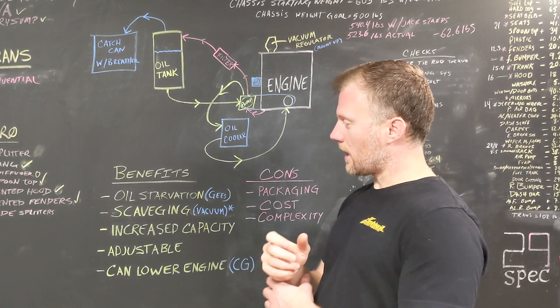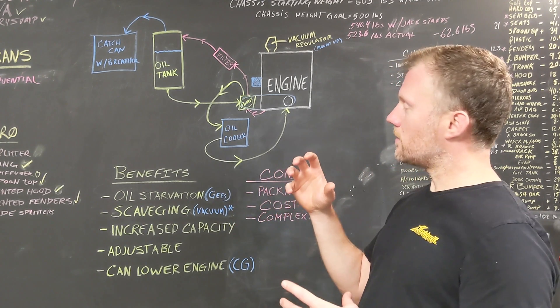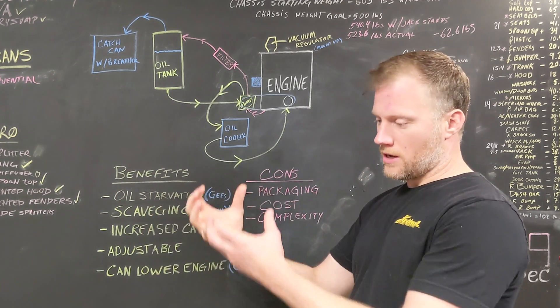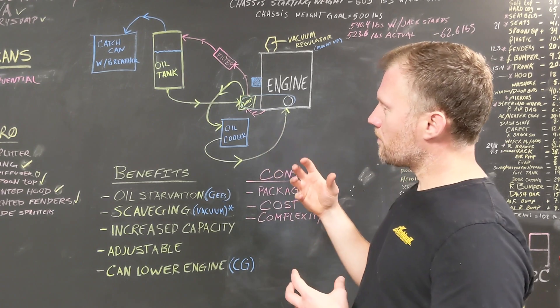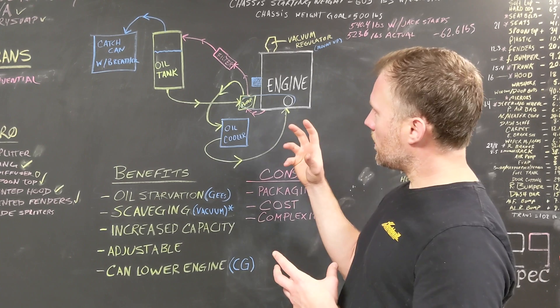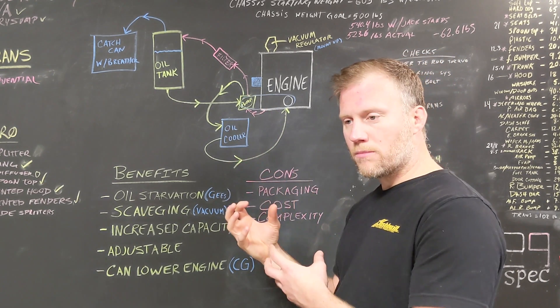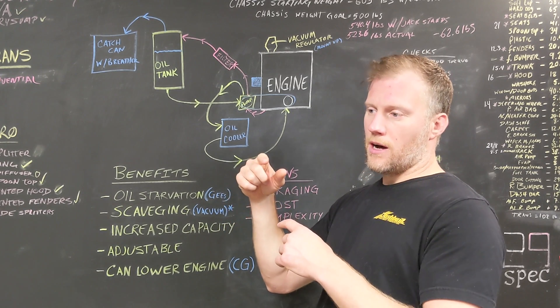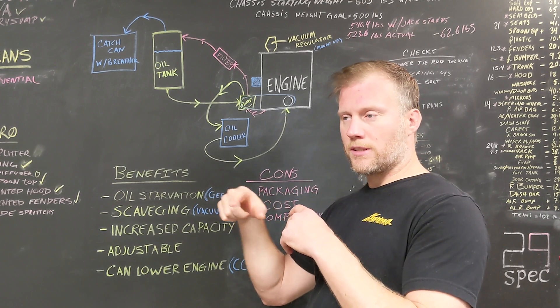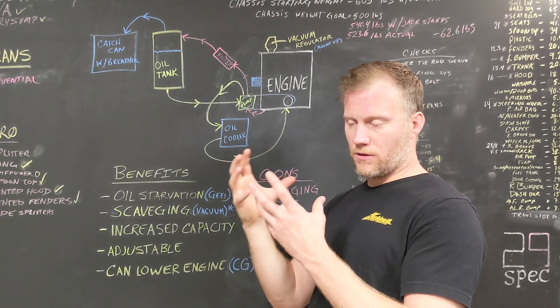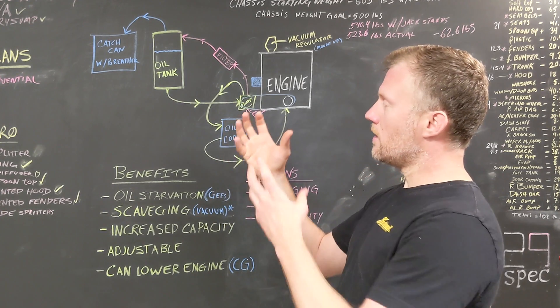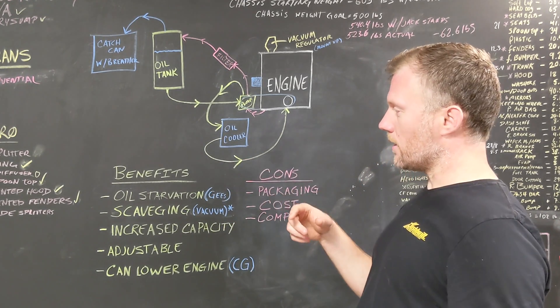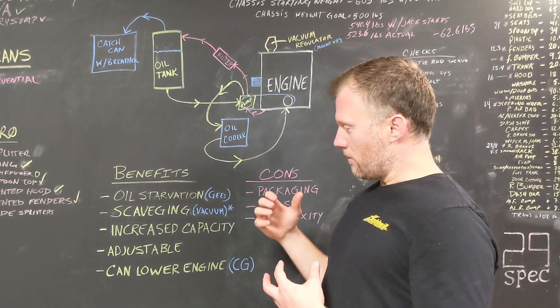The other one is scavenging. So a dry sump oil pump does two things. It not only pressurizes the oil through the engine, but it also pulls a vacuum or sucks the oil out of the engine. What it can do is pull the air and all that oil mist out of the crankcase. So as your engine is turning 9,000, 10,000 RPM or whatever, with a wet sump system, it has to fight all of that air resistance. And there's obviously oil vapor and stuff inside the crankcase. So if it sucks all of that out, it has a lot less air resistance and oil to fight through so it can rotate more freely. So you can get more power basically.